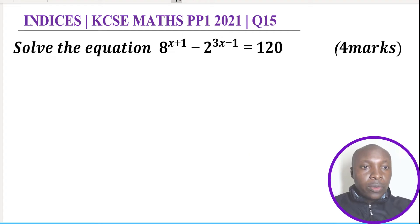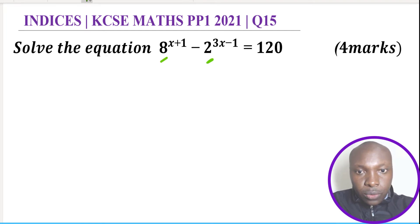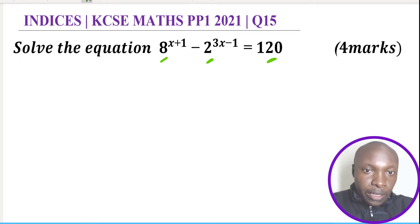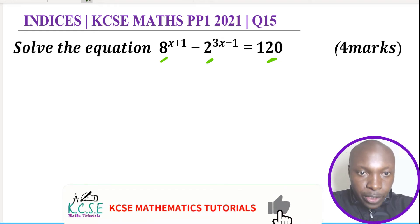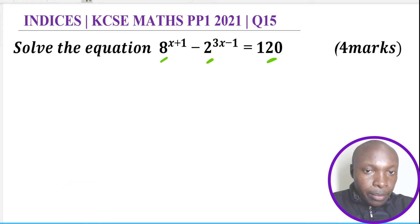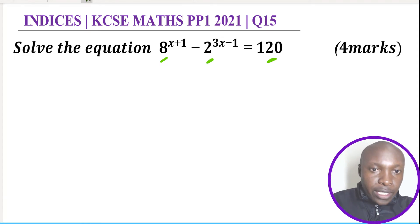The first thing we're going to do is see whether it is possible to express all these numbers — 8, 2, and 120 — to the same base. Looking at the left hand side, it is possible to express the two numbers to the same base: 8 can be expressed to the base of 2. However, 120 cannot be expressed to the base of 2, so we start with the left hand side.